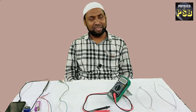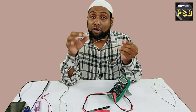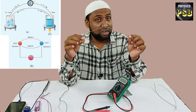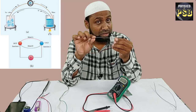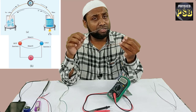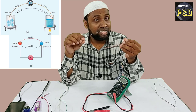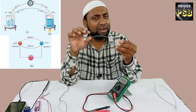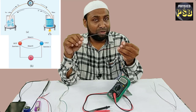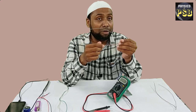Seebeck discovered that in a closed circuit consisting of two different metals, when the junctions are maintained at different temperatures, an EMF is developed in the closed circuit. The current that flows due to this EMF is referred to as thermoelectric current, and the circuit is called a thermocouple. Here I have made this thermocouple using iron and a copper wire.